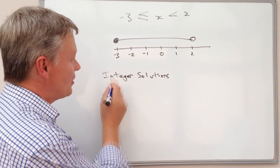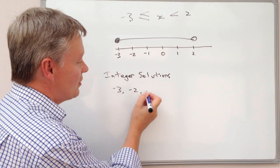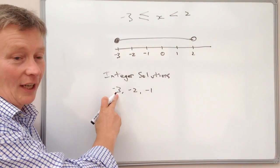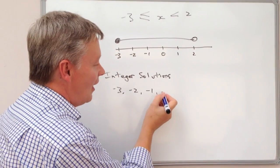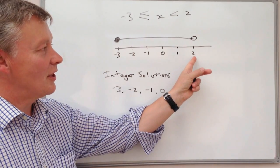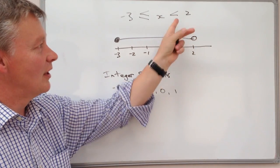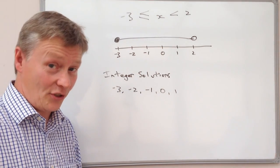So whole numbers in this particular case would be -3, -2, -1. I can include -3, as we've said before, because it's closed. 0, 1, but not 2, because 2 isn't included, because the value of x is going to be less than 2.